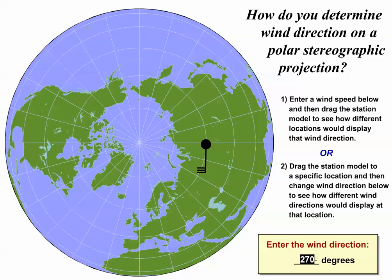Now let's change the wind direction to 180 degrees. The wind is blowing from south to north, and we know that because the station model is paralleling the local longitude line blowing from south toward the North Pole.